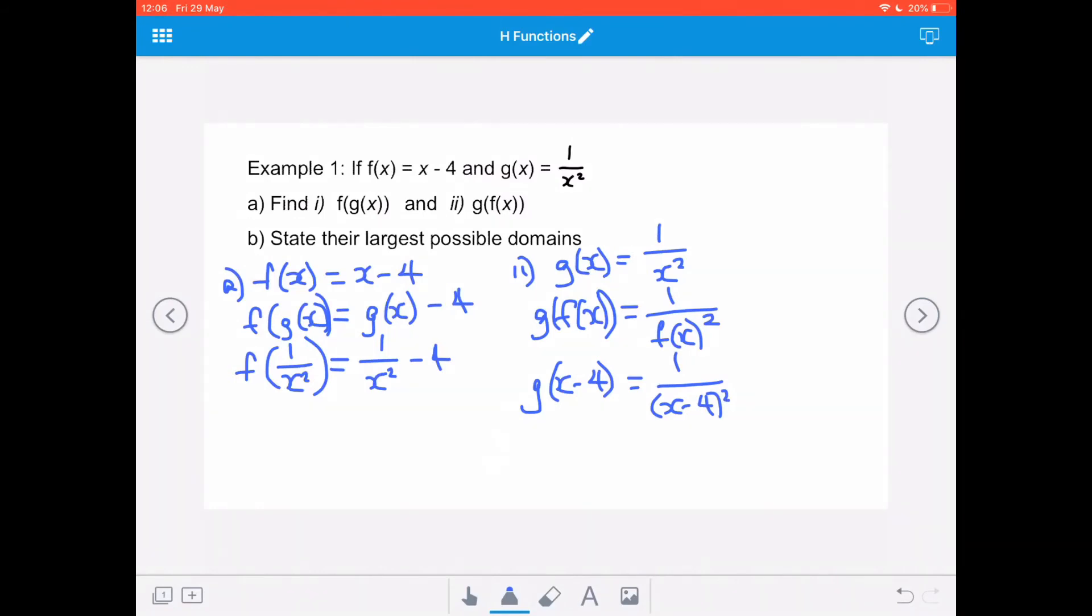So in part b, I'm asked to state their largest possible domains. So the restriction on both of these functions is that I can't divide by 0. So in part b, part 1, I know that x squared cannot equal 0. And that means that x also cannot equal 0. So my largest possible domain is that x is the set of all real numbers, except when it's 0. So x cannot equal 0.